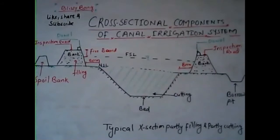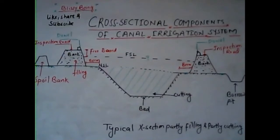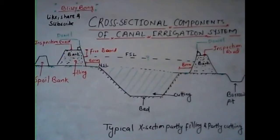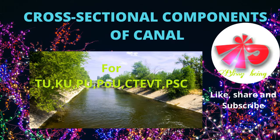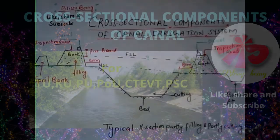Whenever the earthwork in the filling section is greater than the earthwork in the cutting section, the earth shall be borrowed — and for borrowing such earth you use borrow pits. When the earthwork in cutting exceeds the earthwork in filling, the extra soil is deposited in a bank called the spoil bank. These are the various components used in a canal irrigation system in a partly filling and partly cutting section.